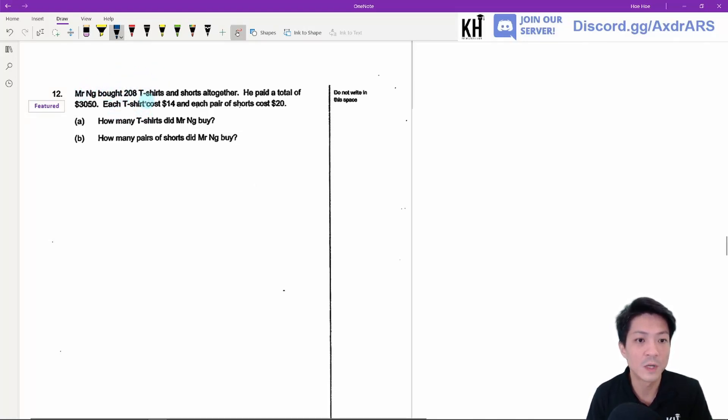Question 12. Mr. Ng bought 208 t-shirts and shorts altogether. He paid a total of $3,050. Each t-shirt cost $14 and each pair of shorts cost $20. How many t-shirts did Mr. Ng buy and how many pairs of shorts did Mr. Ng buy?